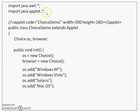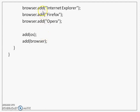The program has the usual two imports and an applet tag. The class ChoiceDemo extends Applet with two Choice objects declared: OS and browser. In the init method, we instantiate both using the default constructor. Items are added to OS using the add method one after another for various operating systems, and similarly for the browser object. Finally, both OS and browser are added to the applet by calling add.